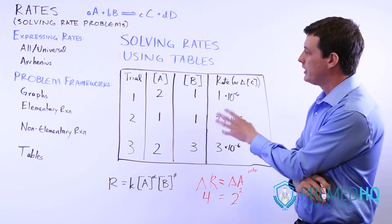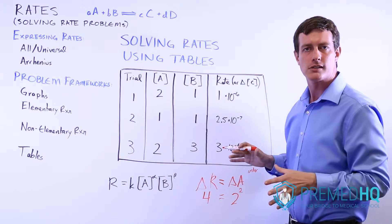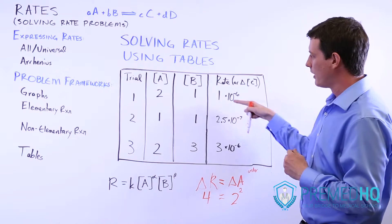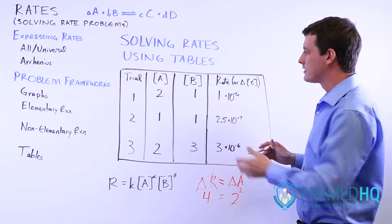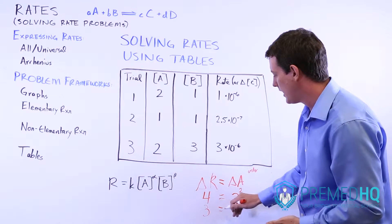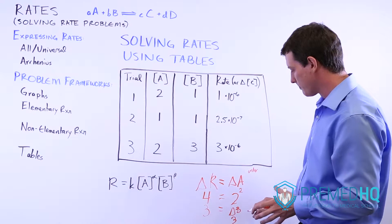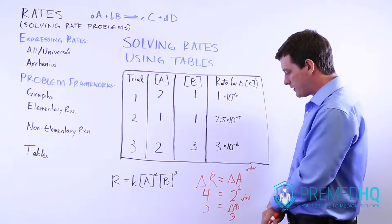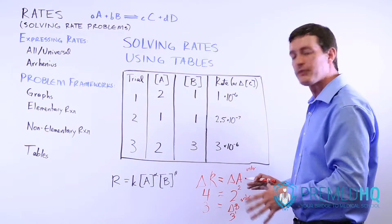For B, we need a trial where B changes but A doesn't. Looking at the first and third trials, A remains constant and B triples. When you triple B, the rate goes from 1 times 10 to the negative 6 to 3 times 10 to the negative 6 — the rate triples. We can express this: the tripling of the rate equals the change in B, which is three raised to some power. The exponent we raise three to in order to equal three is one, so it's first order with respect to B.